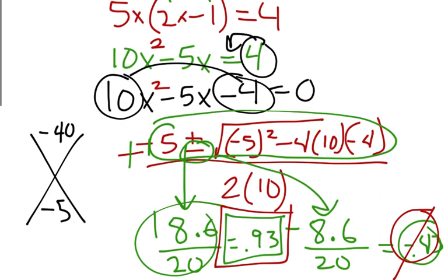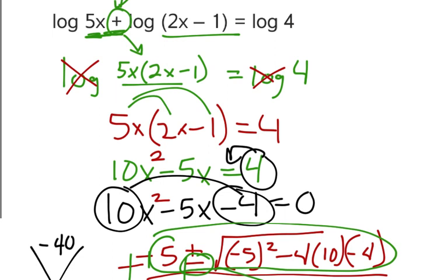Sorry you had to end up using quadratic formula, but that's because we ended up distributing the 5x and getting x squared. x squared means you either have to do magic x or quadratic formula if it doesn't factor.